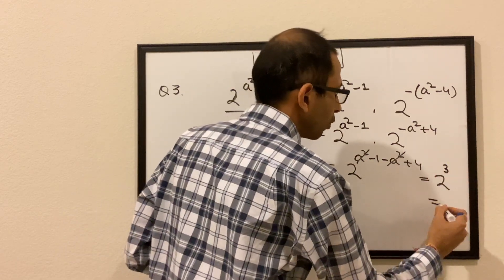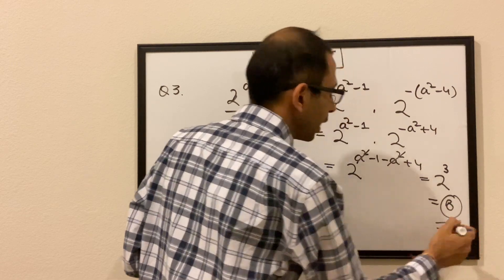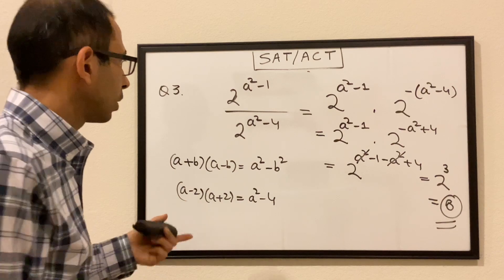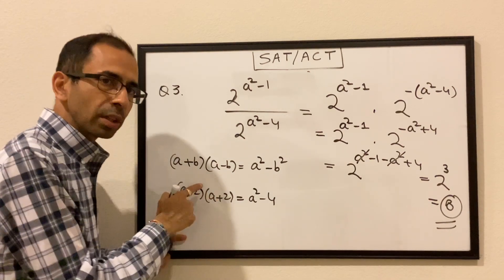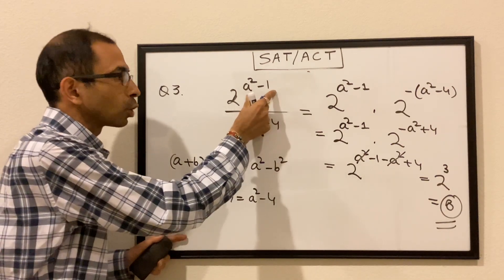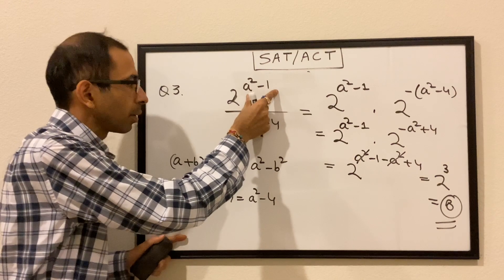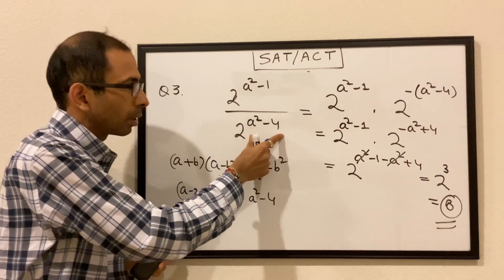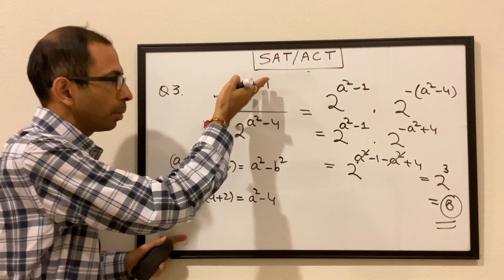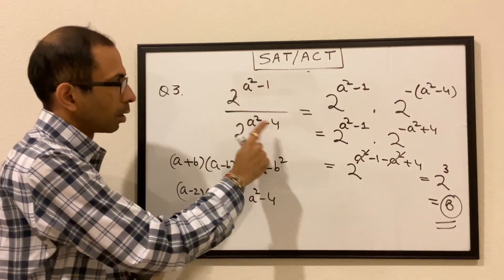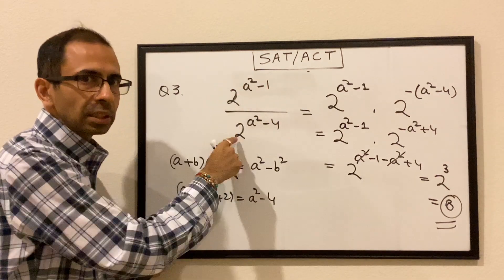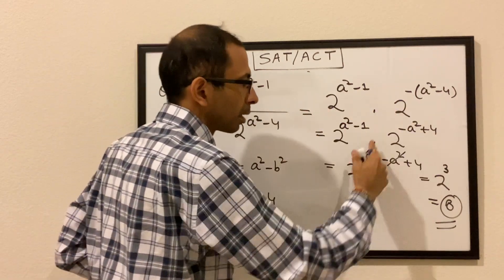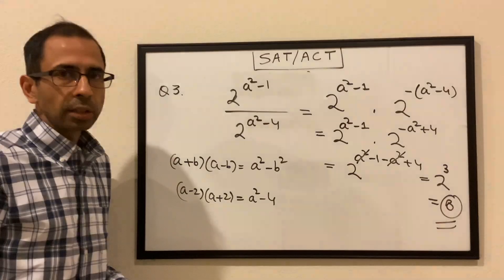So 8 is the answer. To reiterate: we used the difference of squares to get a² minus 1 as the numerator's power and a² minus 4 as the denominator's power. We moved the denominator up with a negative exponent, then added the powers and simplified to get 2³ equals 8.